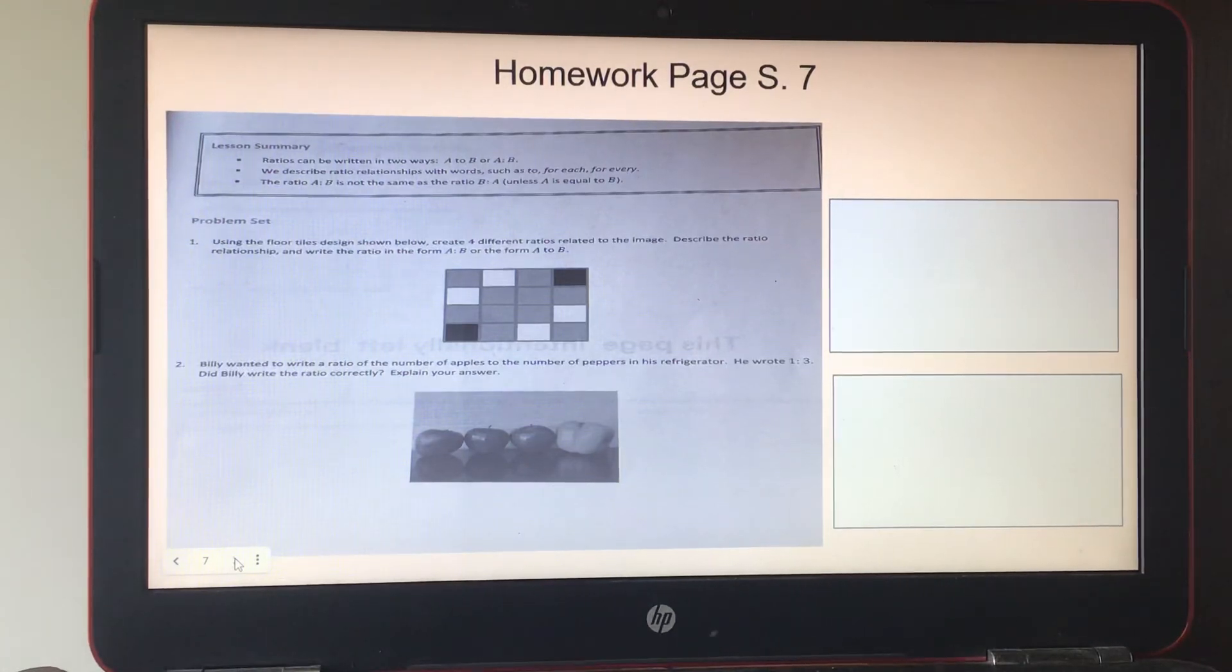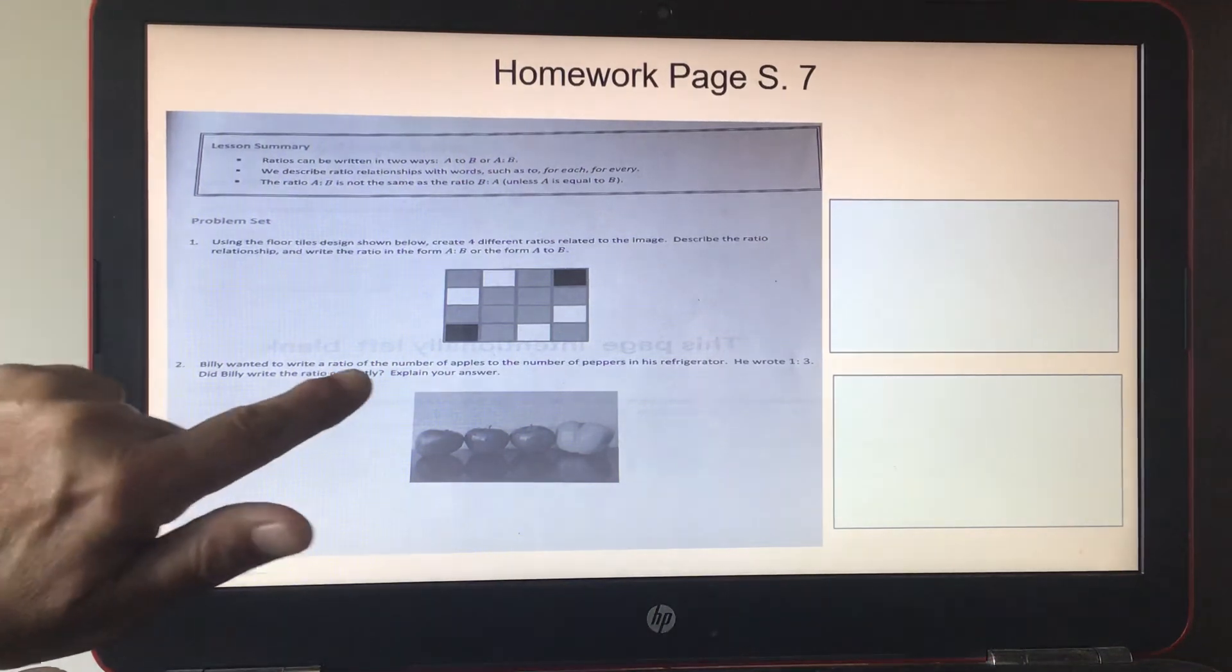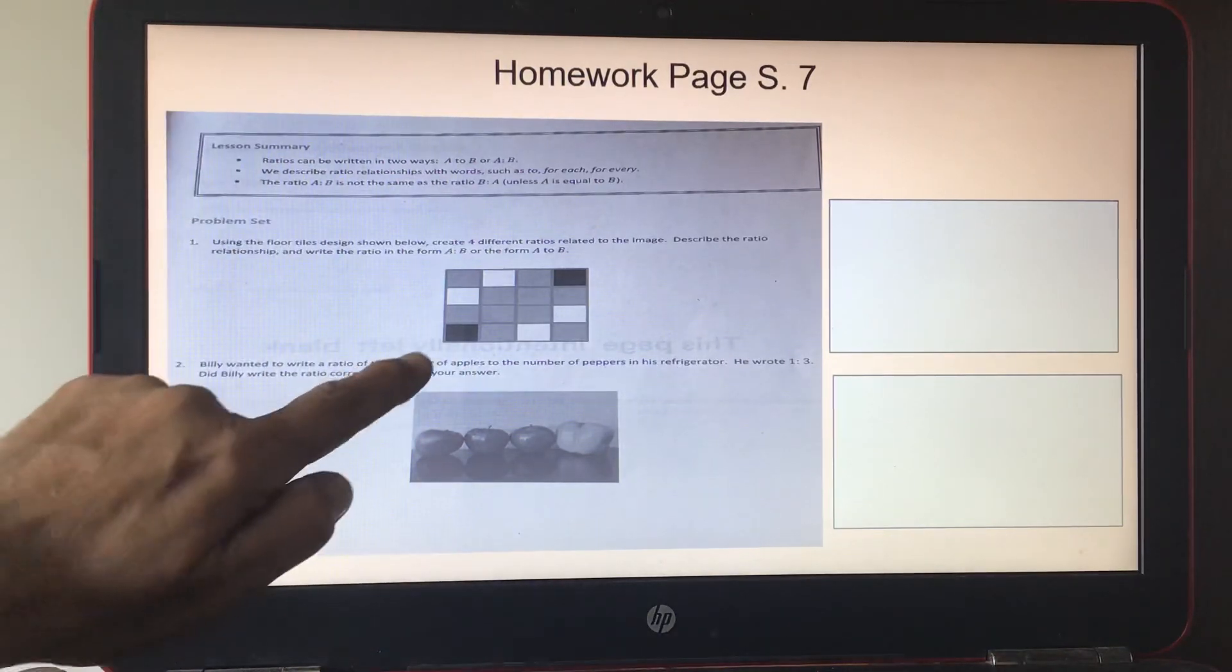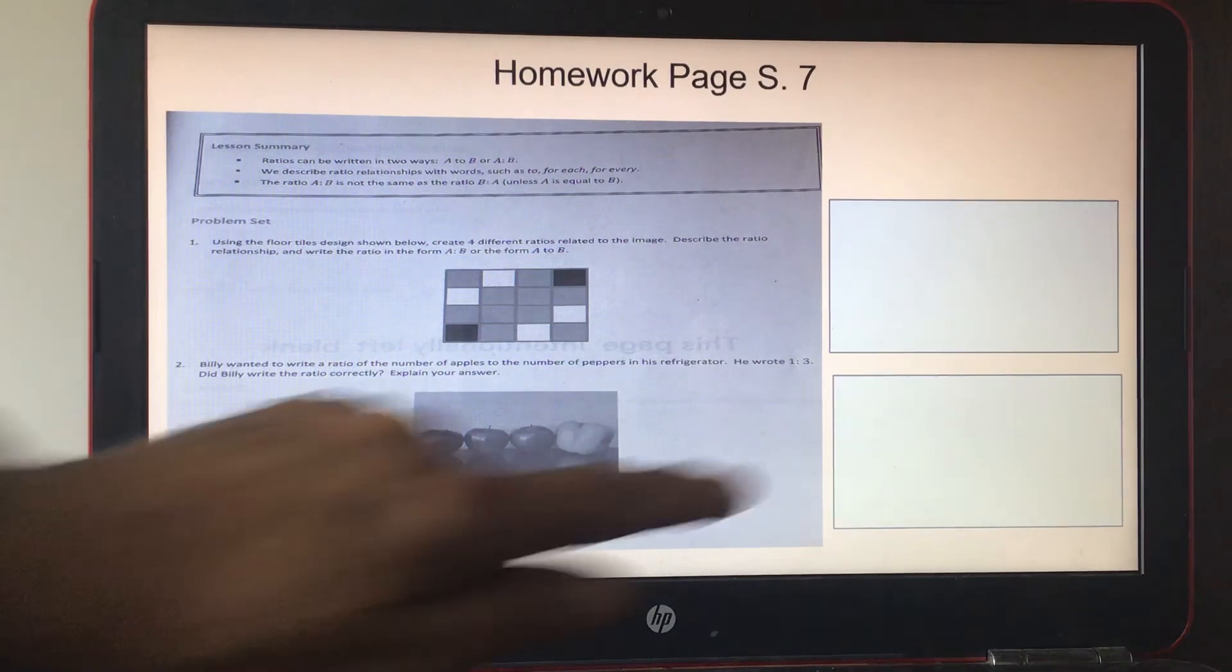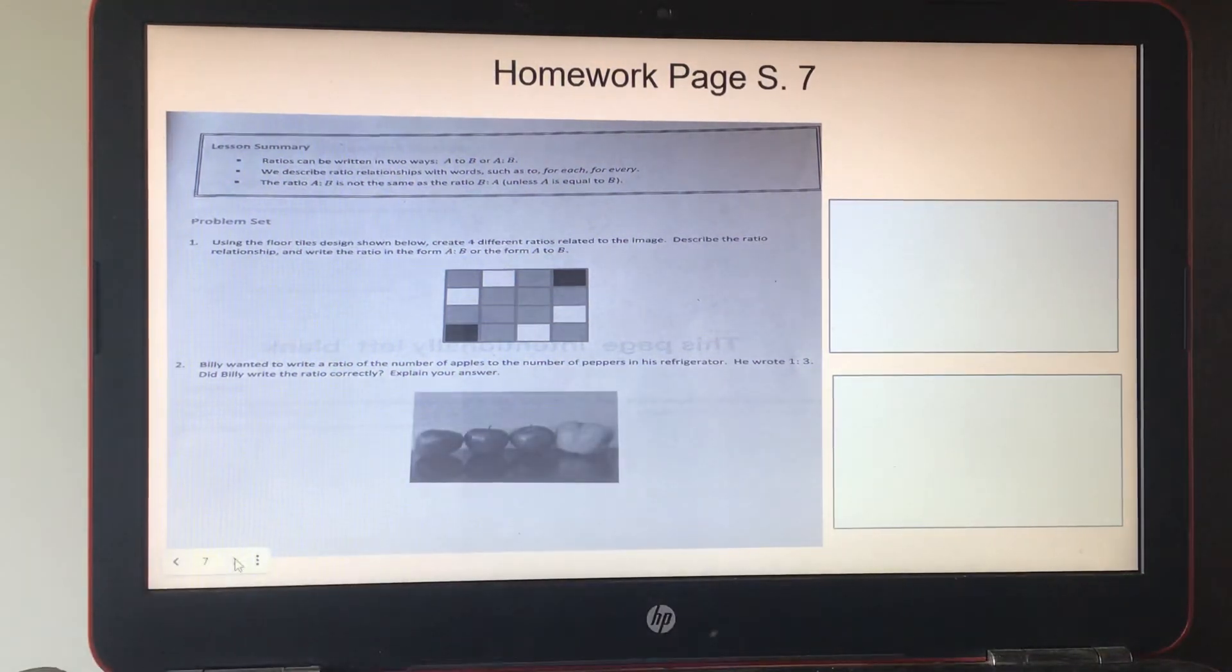Number two, Billy wanted to write a ratio of the number of apples to the number of peppers in his refrigerator. Remember, always the first word is the first number. He wrote one to three. Did Billy write the ratio correctly? Explain your answer right here. Thank you.